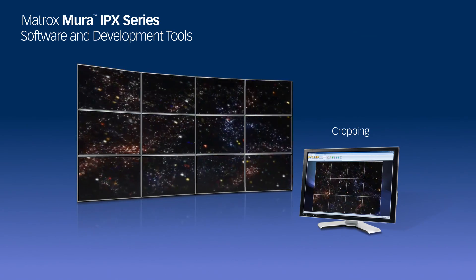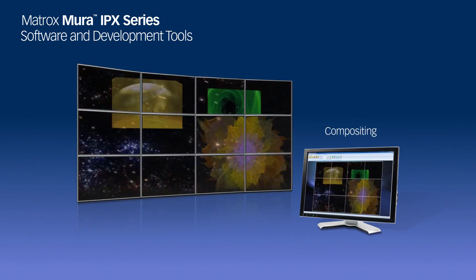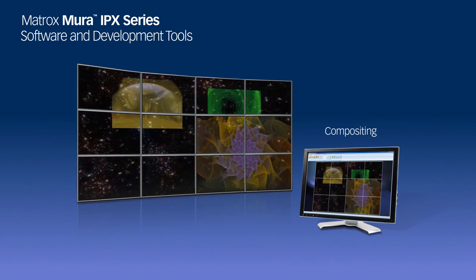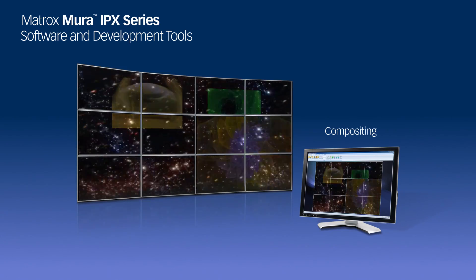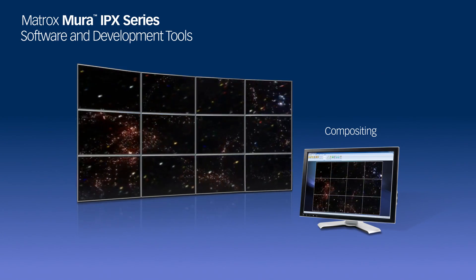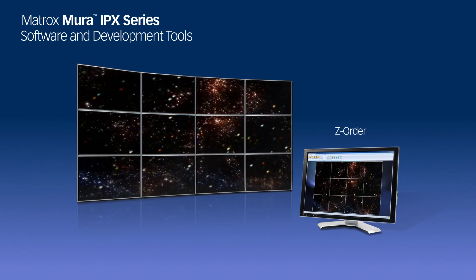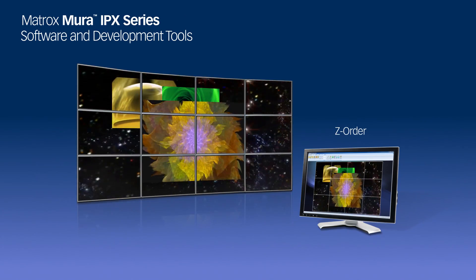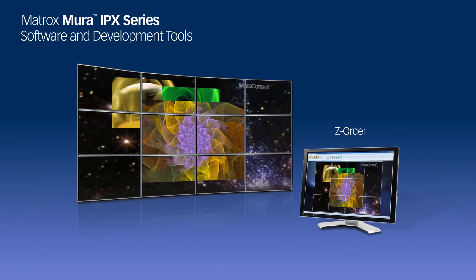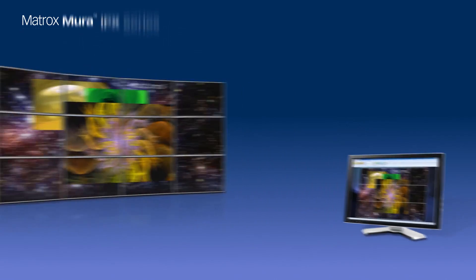Mura Control for Windows also permits compositing for alpha blending and color keying among other effects, changing color correction parameters and the Z order of sources to create, for example, picture-in-picture configurations and adding multilingual text overlays.